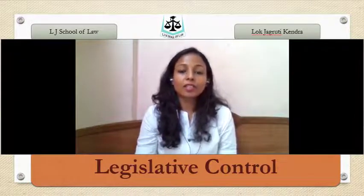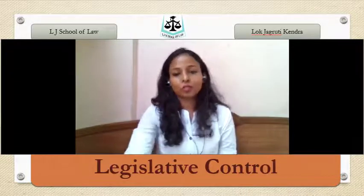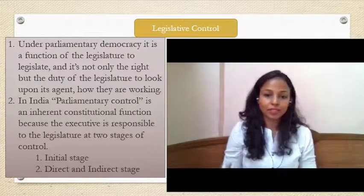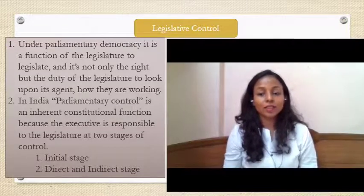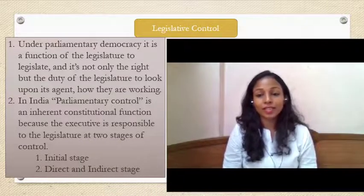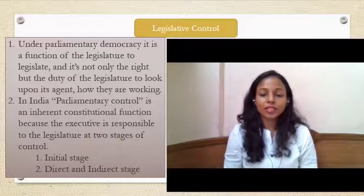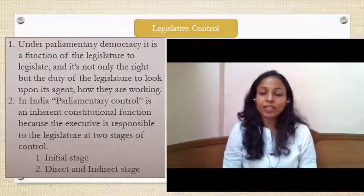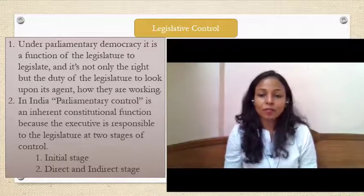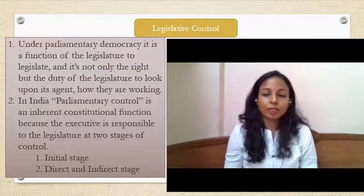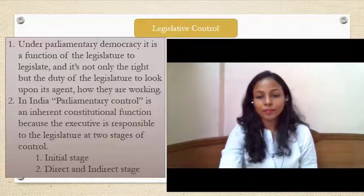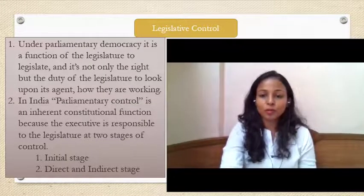We will discuss how the legislature can control the power they have delegated to executive authorities. In a parliamentary democracy, there are three wings that divide their work and operate in their own spheres. But the legislature has a right to make laws and a duty to check upon their agents when they delegate work to them — to verify whether they are functioning properly, within permissible limits, and within the constitutional bounds of the delegated powers. For this, they have parliamentary control in their hands.